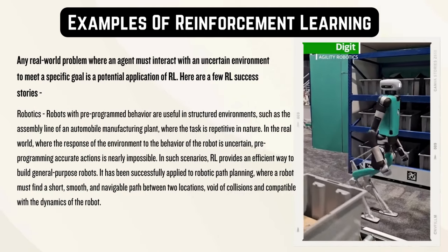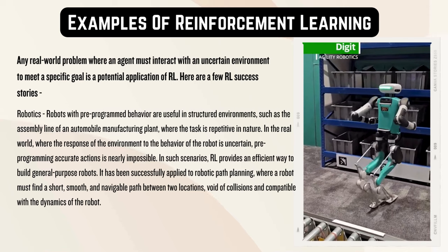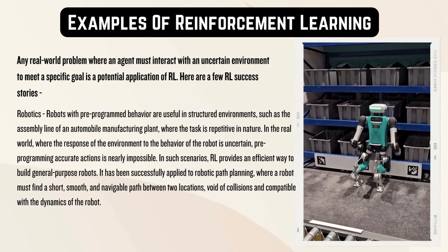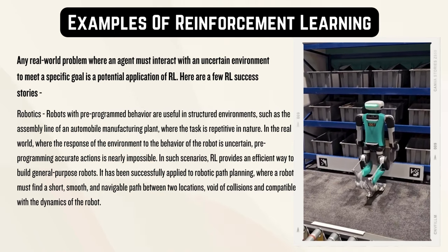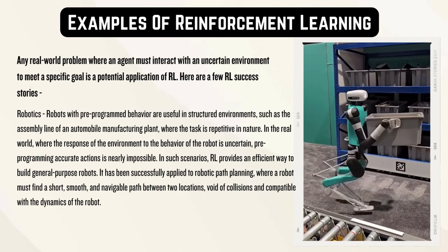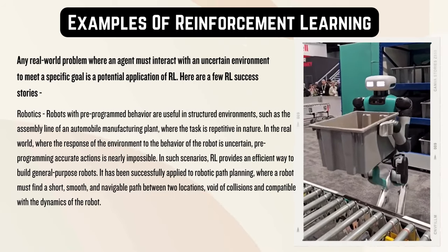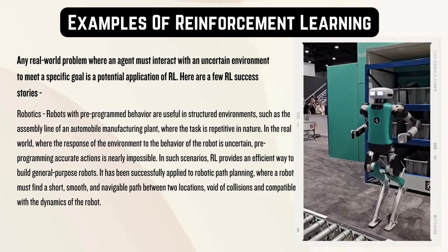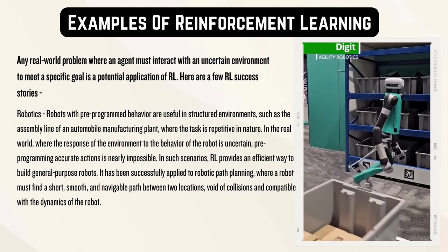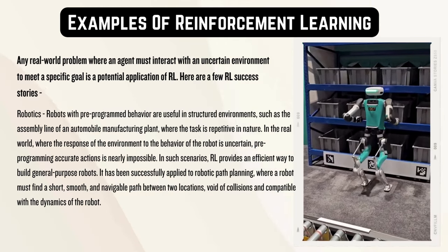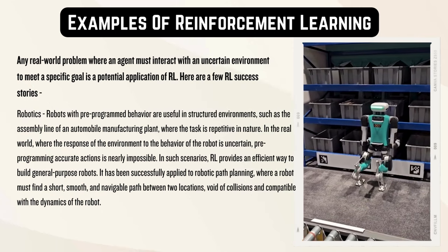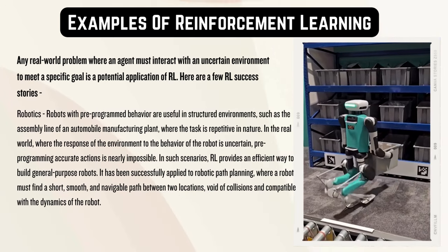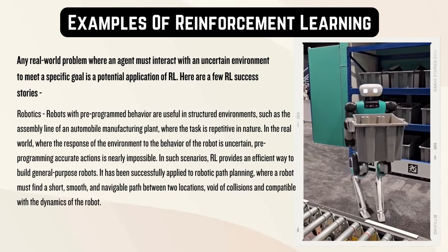Robots with pre-programmed behavior are useful in structured environments, such as the assembly line of an automobile manufacturing plant, where the task is repetitive in nature. In the real world, where the response of the environment to the behavior of the robot is uncertain, pre-programming accurate actions is nearly impossible. In such scenarios, RL provides an efficient way to build general purpose robots. It has been successfully applied to robotic path planning, where a robot must find a short, smooth, and navigable path between two locations, void of collisions and compatible with the dynamics of the robot.